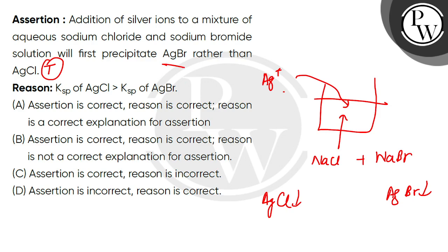AgBr will become a light yellow color and AgCl will become a white color. So, it will be true that it will become first AgBr and then it will become AgCl. Why will it become first AgBr?